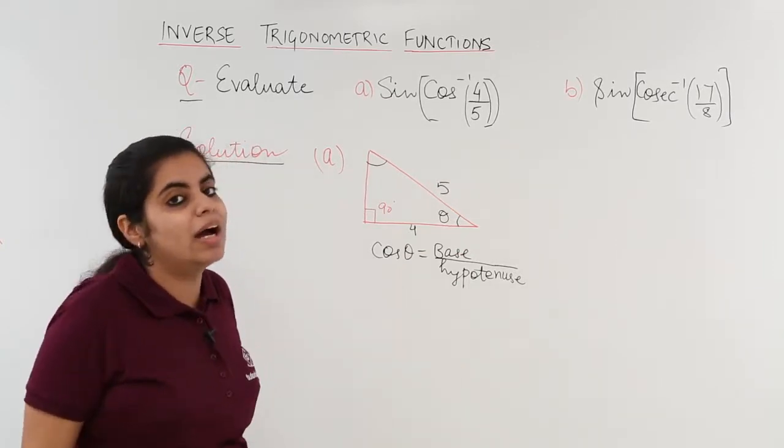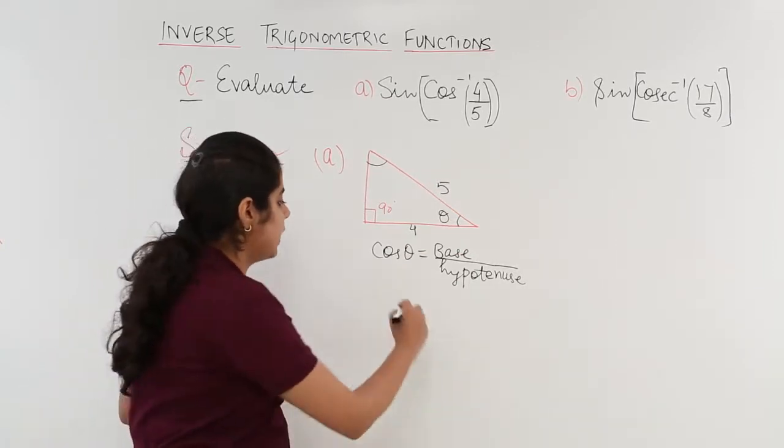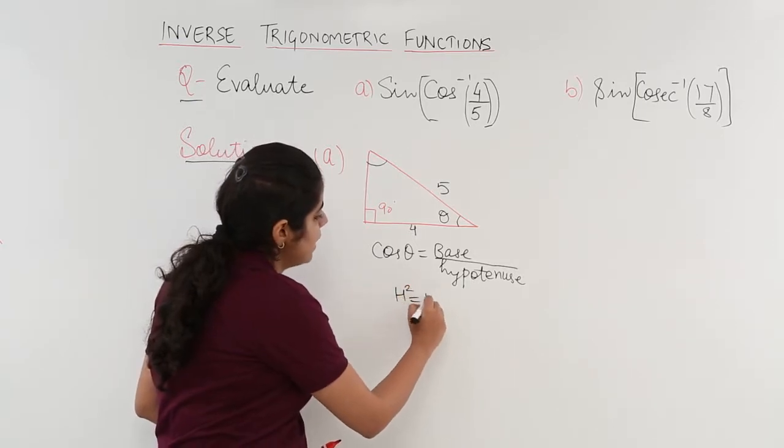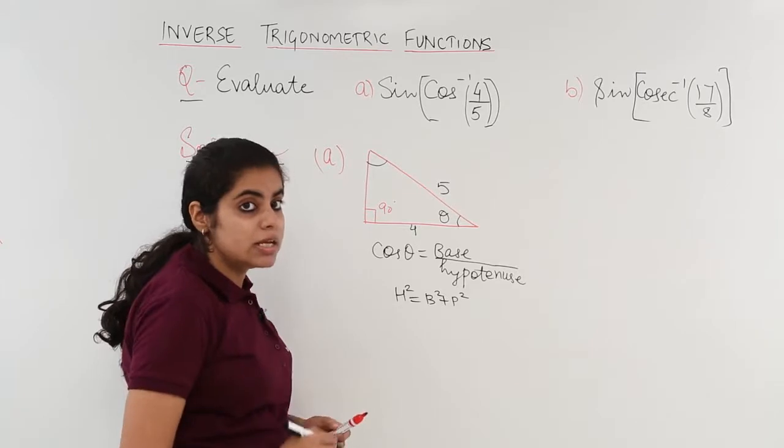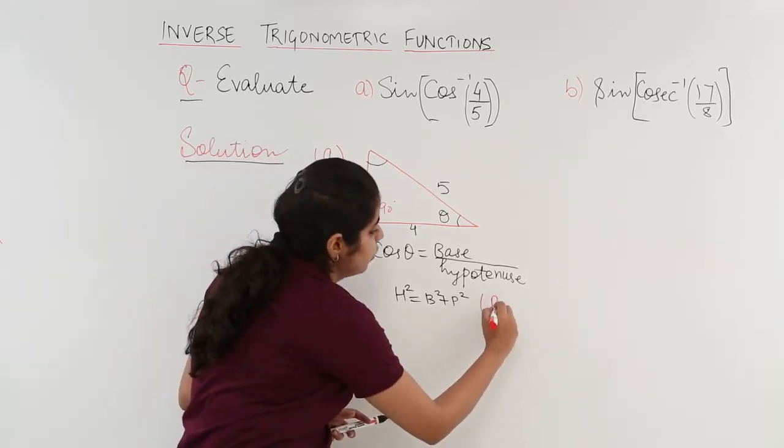Now, by Pythagoras theorem, I already have one thing in my mind that hypotenuse square is equal to base square plus perpendicular square. Now, this is known as the Pythagoras theorem.